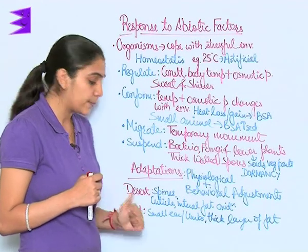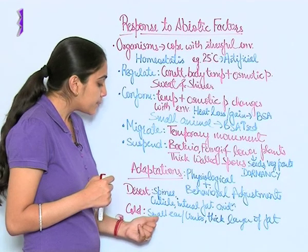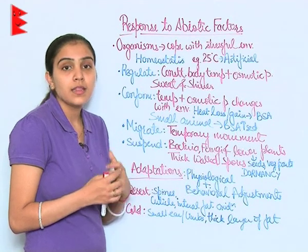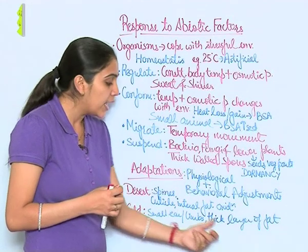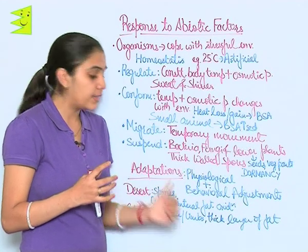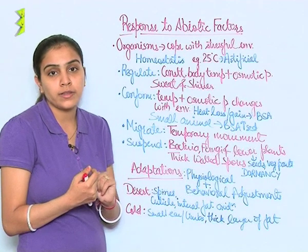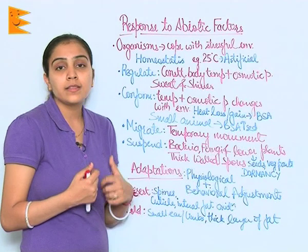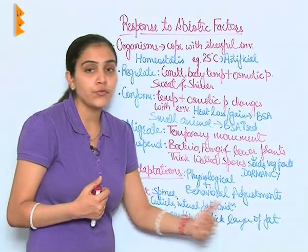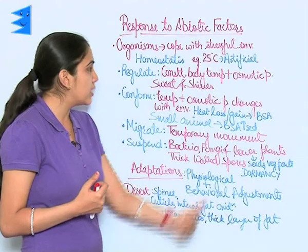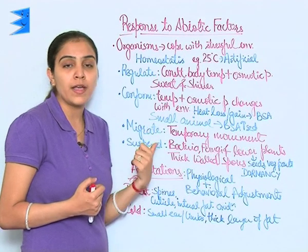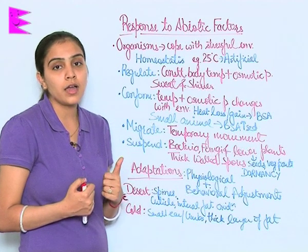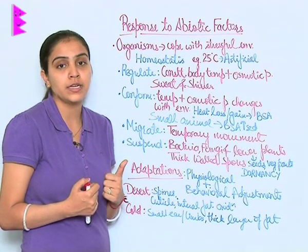In cold climates, animals have small ears and limbs. They may undergo hibernation, and usually there is a thick layer of fat present under their skin that provides insulation. These are responses to abiotic factors and adaptations to survive in harsh or stressful environmental conditions.